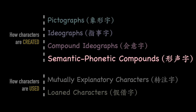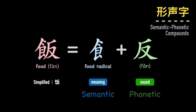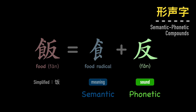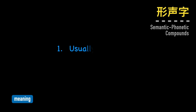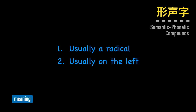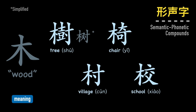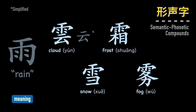Out of the six categories we just discussed, you only need to understand one category to decipher 80% of all Chinese characters — and that category is the semantic phonetic compound. These characters are by far the most common and follow a simple formula: one component that indicates meaning, plus one component that indicates pronunciation. Just understanding one of these two components will drastically help you learn characters, and understanding both would be a huge advantage. For example, if you know that the mu radical indicates wood, then the characters for tree, chair, village, and school will make sense to you. You'll notice that a bunch of weather-related characters have the rain radical, like cloud, frost, snow, and fog.